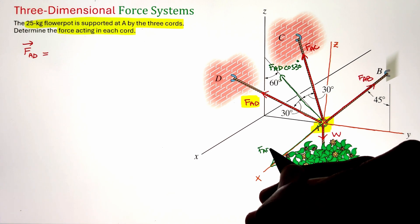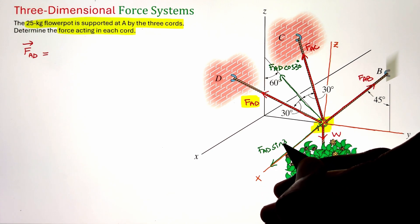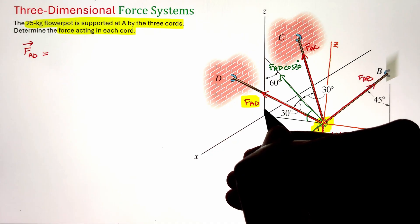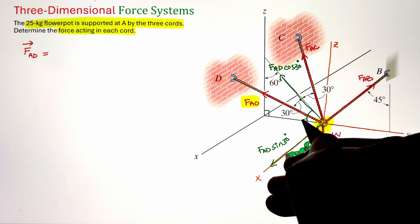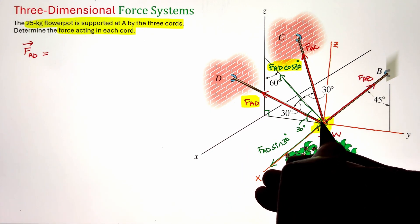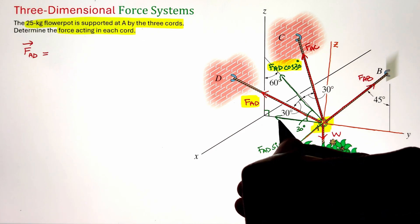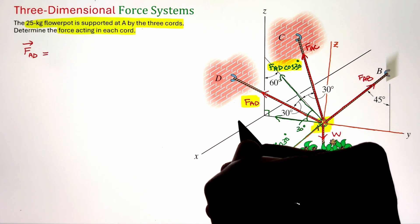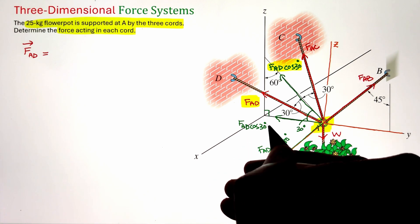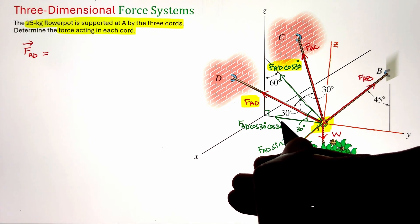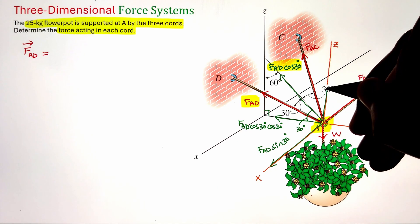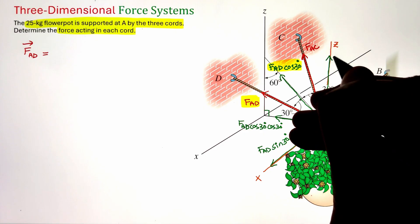Taking the cosine function projects our force along the line on the z-y plane. Taking sine 30 projects it along the positive x-axis. The component F_AD cos 30, which still lies along the z-y plane, needs to be further resolved along the y and z axes. Taking cos 30 projects it along the negative y direction, whereas taking sine 30 projects the force component along the positive z direction.